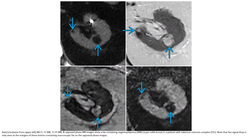Non-contrast T1 MRI, T1 fat-saturated, and opposed-phase images are shown. Fat-containing angiomyolipomas in a patient with tuberous sclerosis complex. Note that signal dropout is only seen at the margin of lesions containing microscopic fat on the opposed-phase images.